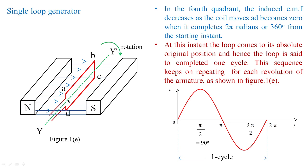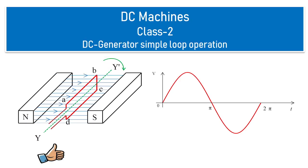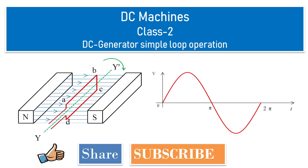To summarize: this is a simple loop generator with a single coil assumed to rotate between north and south poles with the help of an external agent. The coil positions change and EMF is induced, given by E = φPZ / 60A. This is the operation of the simple loop generator. Please share this video among your friends, subscribe to this channel, and press the bell icon for future updates.